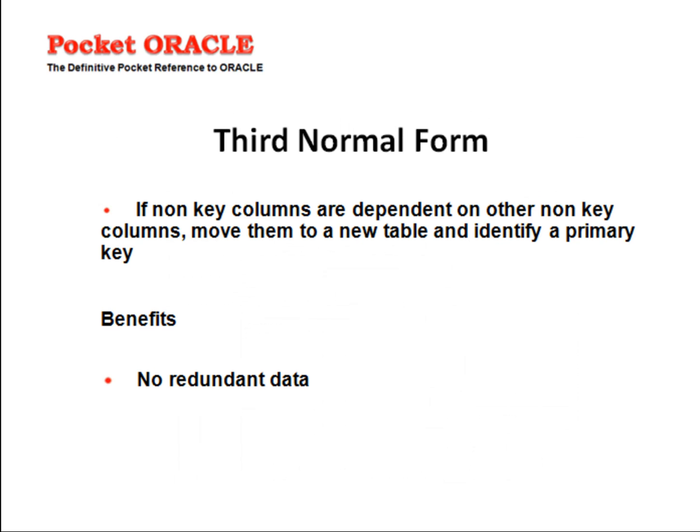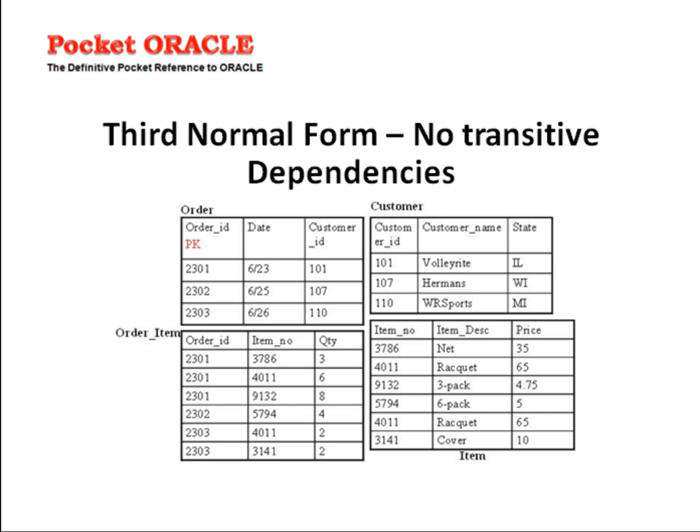Moving to the third normal form. Here, if non-key columns are dependent on other non-key columns, we move them to a new table and identify a primary key. The benefit of third normal form is that data redundancy is much reduced. Third normal form means no transitive dependencies. Here we have now created a new table, customer, separating the customer's info.